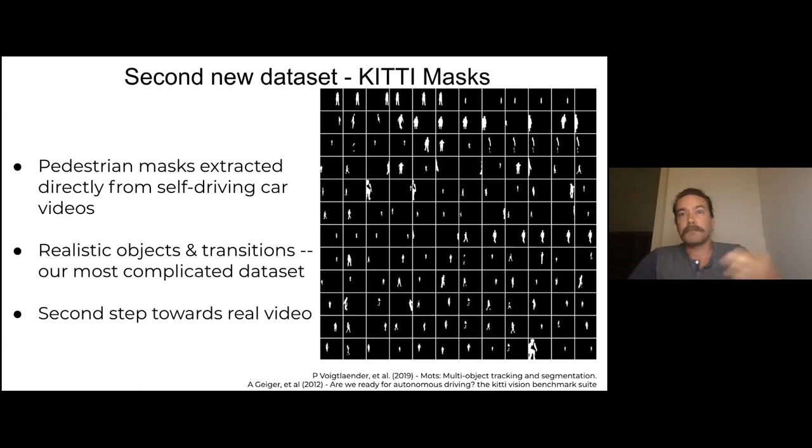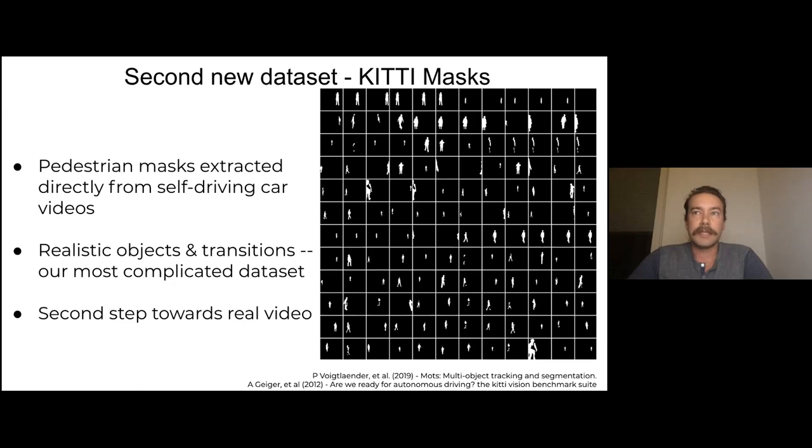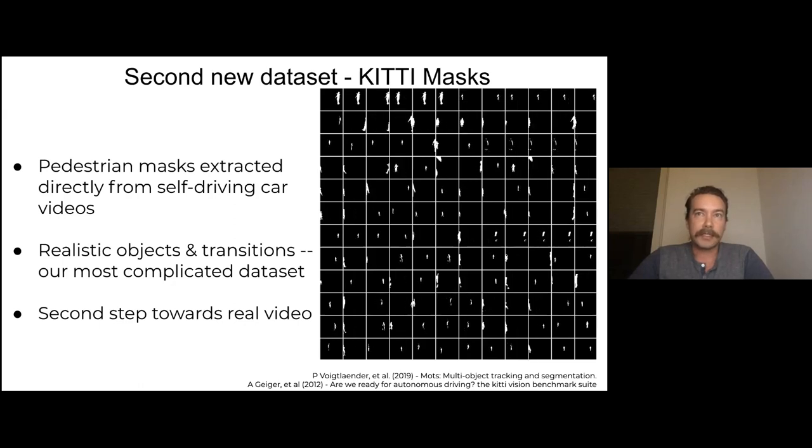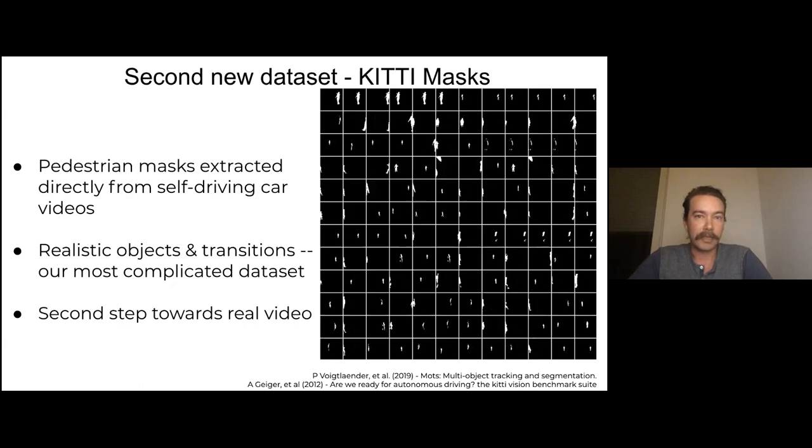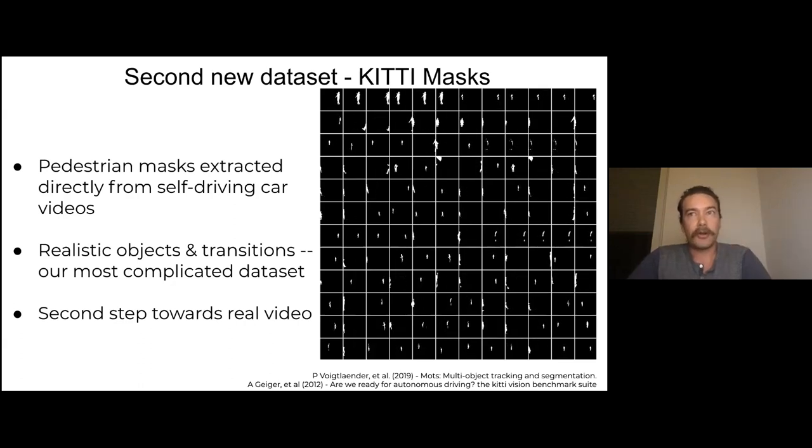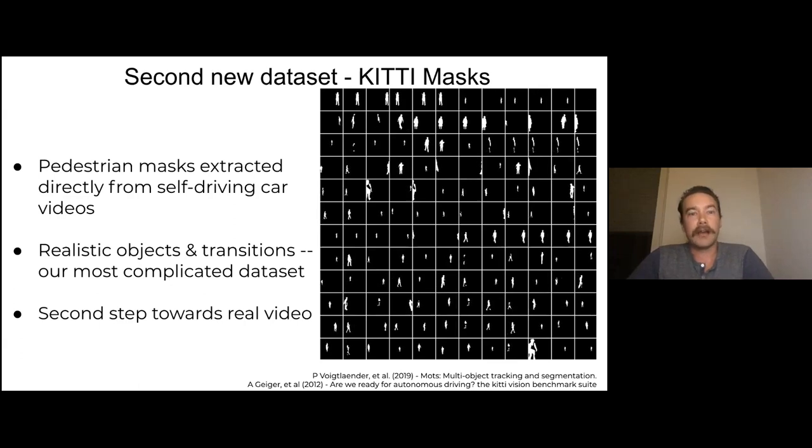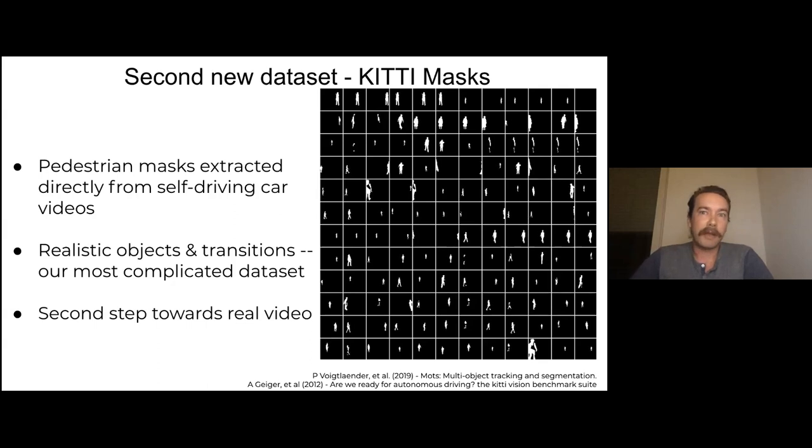As a next step, we used the kitty dataset. So this is masks extracted directly from self-driving car cameras. So we have this dataset of videos from self-driving cars. And the cars also have a LIDAR sensor. It's a laser depth sensor, which makes it really good at detecting objects in the world. You know, if a person's in front of a car, they're going to be at a certain depth and everything else is going to be at a different depth. So it's easy to get a very fine-grained mask. And so again, another group used this information to extract these masks. We pulled out the human category and converted it into this dataset. And again, we measure the position and area of these ground truth vectors.